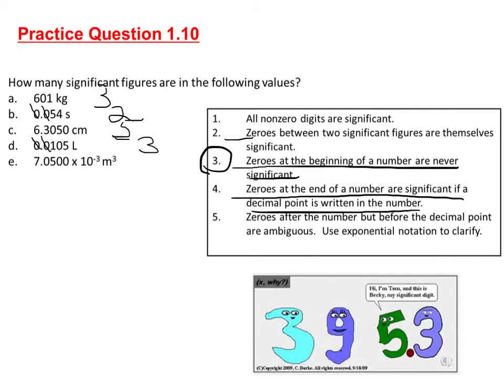E is 7.0500 × 10⁻³ meters cubed. When we have scientific notation, that helps us figure out how many digits there are. The seven and the five are both significant.